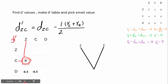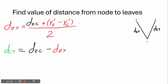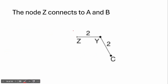We find the distance from Z to Y and from C to Y. Using the formula, we take D_ZC and the R' values, giving D_ZY = 2 and D_CY = 2. We draw two branches of equal length 2 from node Y. Since Z was previously connected to A and B, we join everything together, so taxons A, B, and C are now all connected.